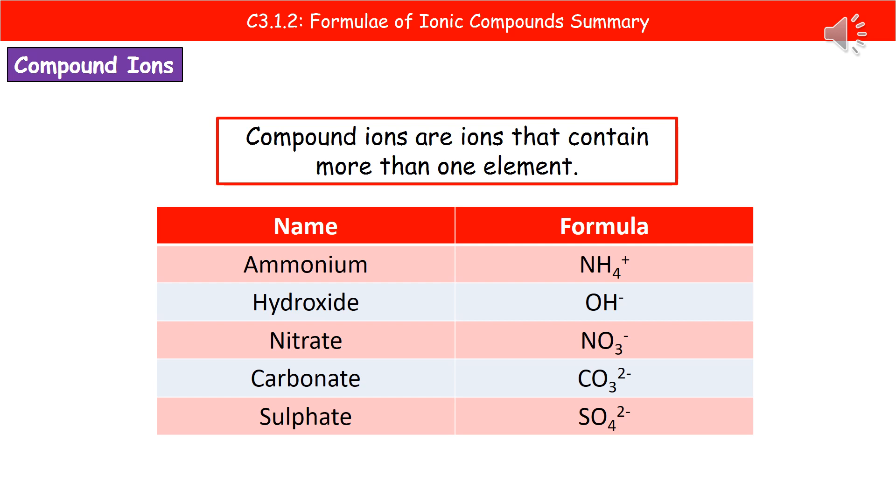Next we're going to consider ions called compound ions. A compound ion is something made up of more than one element. Until this point, we've only looked at ones that occur on the periodic table. But there are some very common ions we'll encounter in chemistry that have more than one element associated, and these are shown in that table.